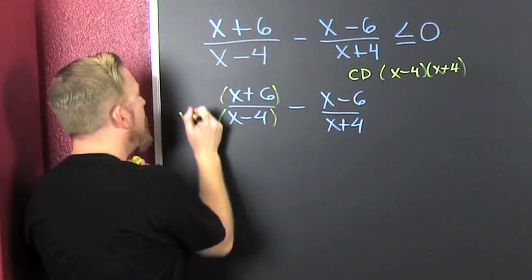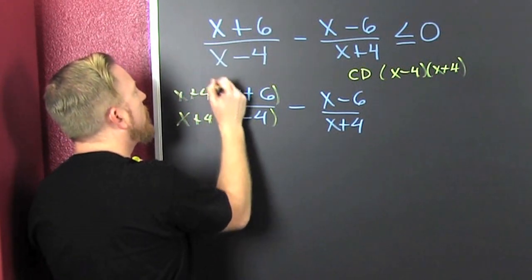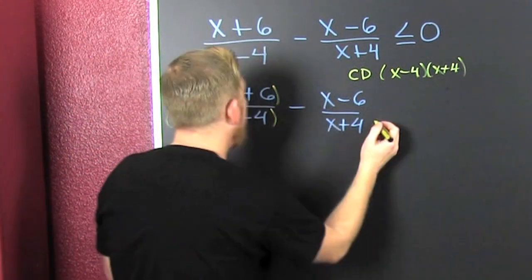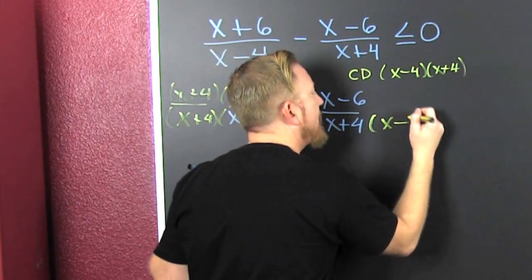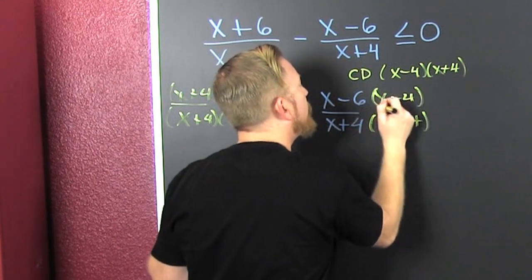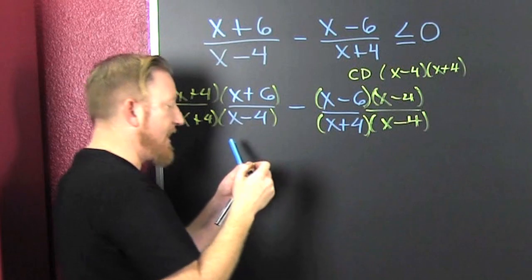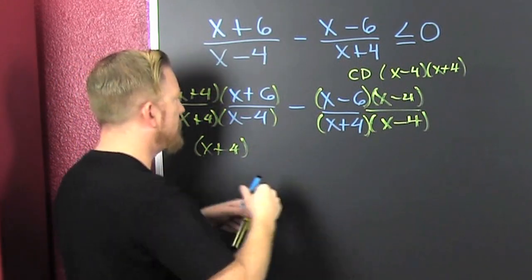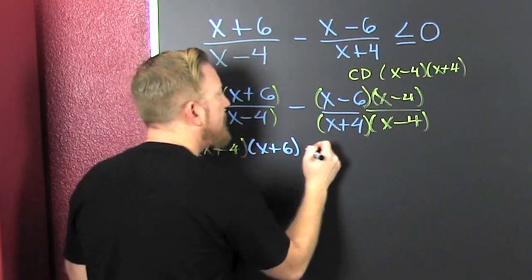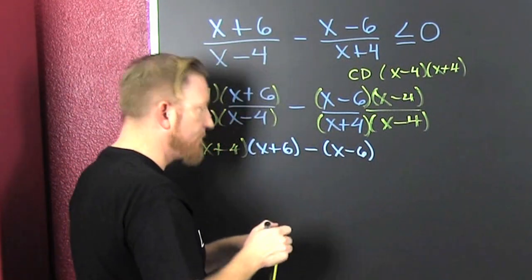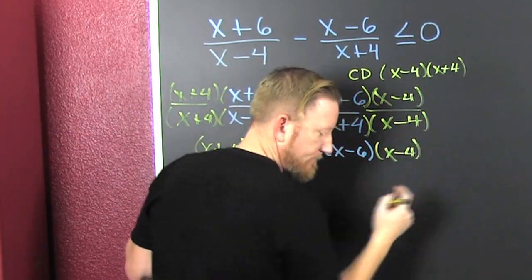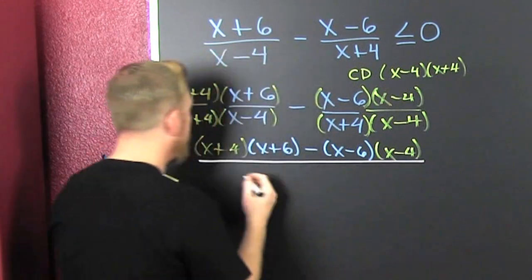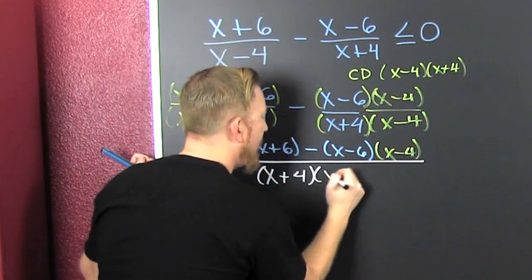I gotta multiply this side top and bottom by x plus 4, because we explore what a common denominator means - it means they're gonna be the same. So on this one I'm gonna multiply by x minus 4 and x minus 4. Now that we're multiplying those guys by that common denominator we can write those: x plus 4, and then x plus 6, and then that's minus that x minus 6, and then that's times x minus 4. Our common denominator is x plus 4 times x minus 4.